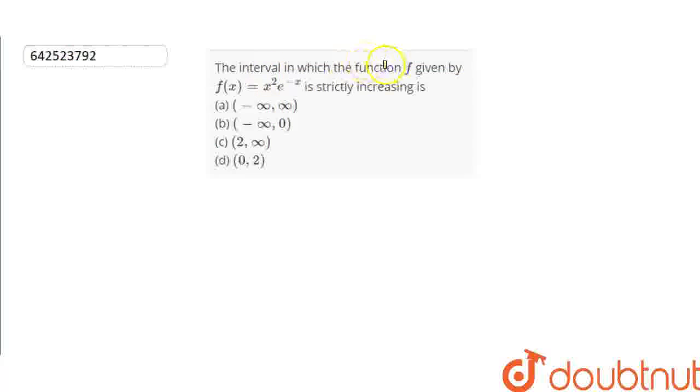The interval in which the function f(x) = x²e^(-x) is strictly increasing is: (a) (-∞, ∞), (b) (-∞, 0), (c) (2, ∞), or (d) (0, 2). We need to find at which of these options our function is strictly increasing.